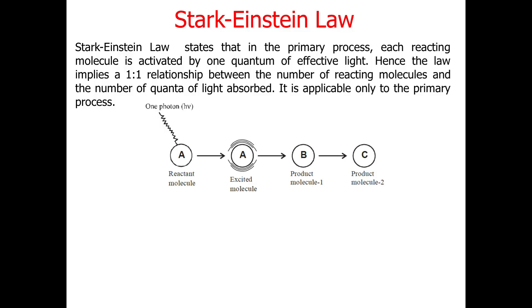When one photon of energy activates one molecule of the reactant, the molecule A present in the ground state goes to the excited state A*. When it becomes activated by absorption of photon energy, it becomes the A* state. Alternatively, if we take one mole of the reactant molecule, then one Einstein of light energy is required, and one mole of the reactant molecules is converted to the A* excited state.